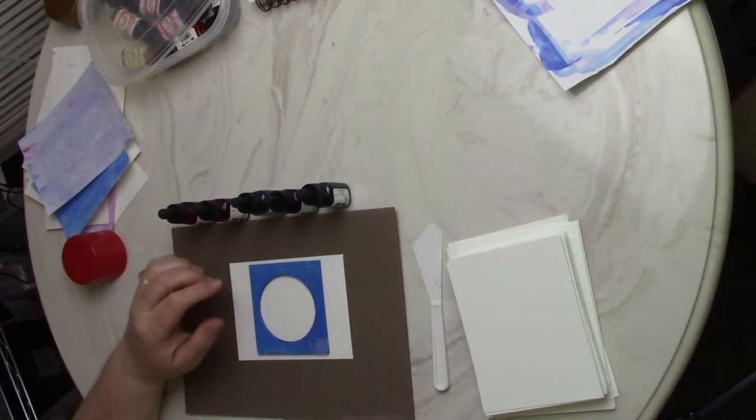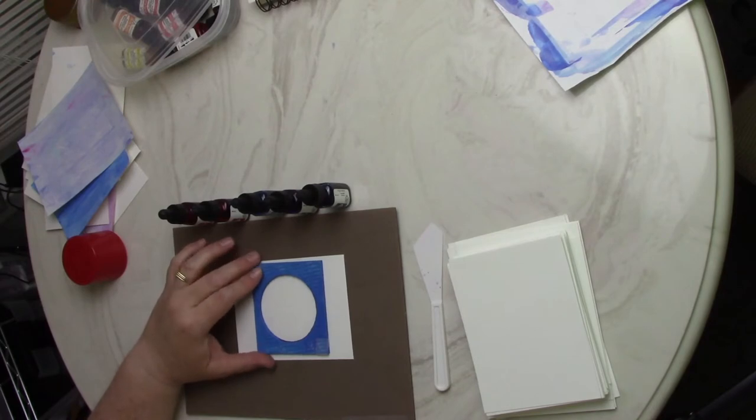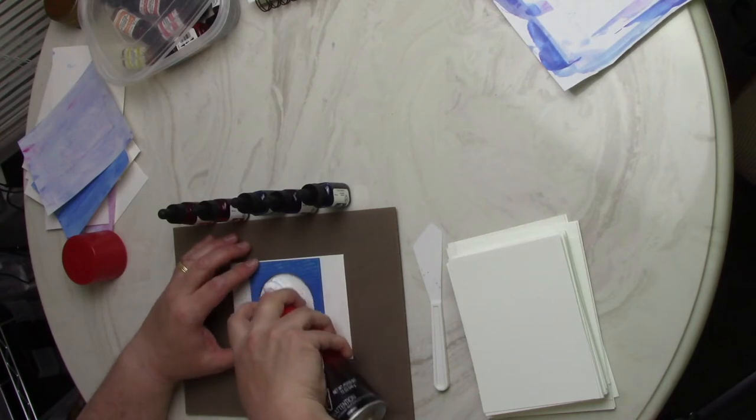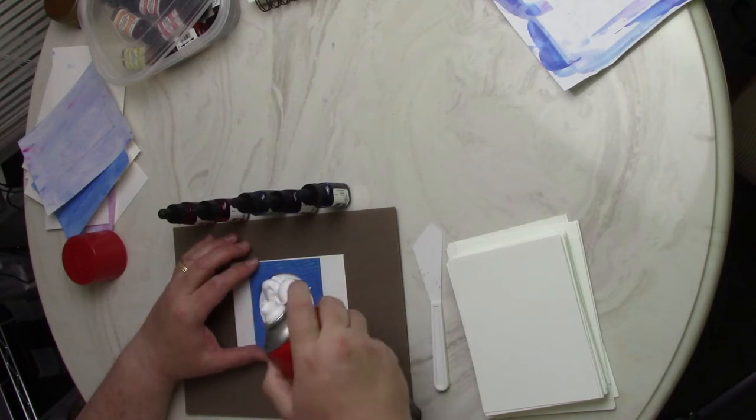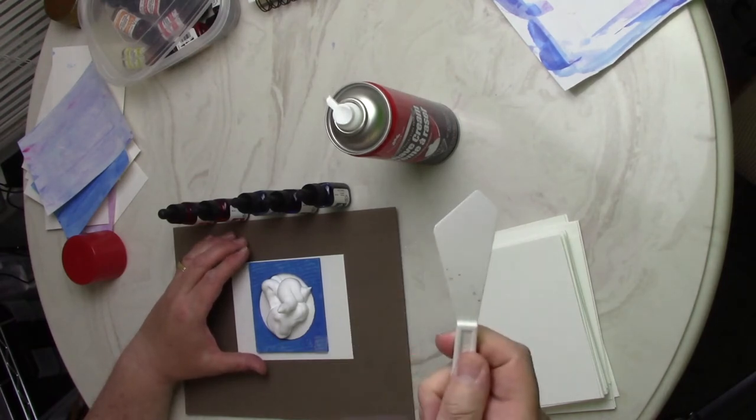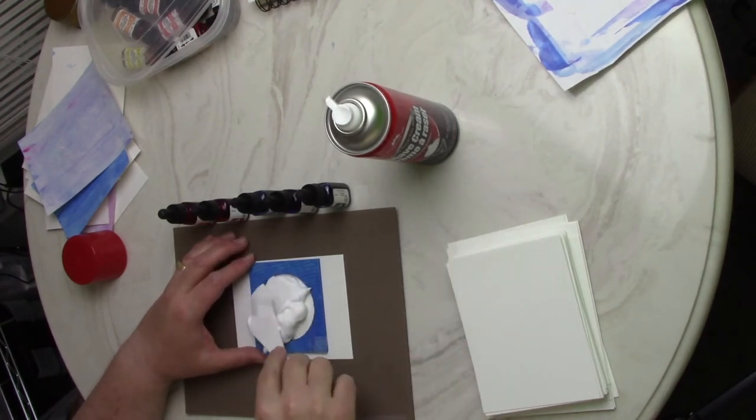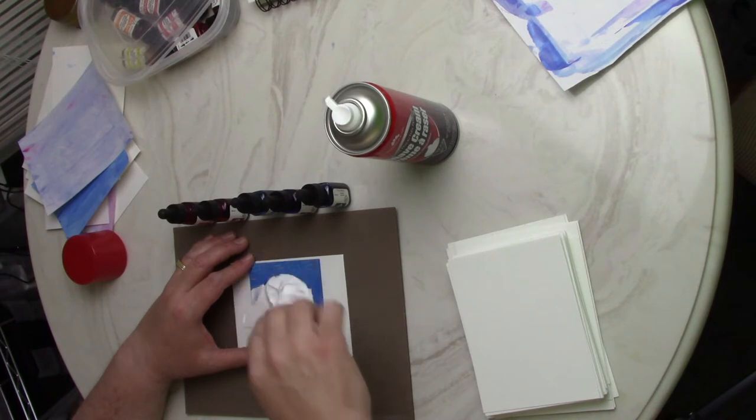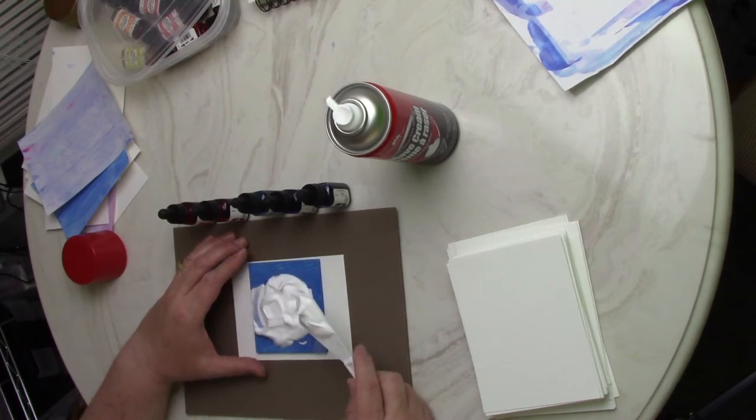So I'm also using a dot that I 3D printed. You don't have to have that but it kind of keeps you in the lines a little bit. I'm also using this paint spatula. So I'm putting the shaving cream kind of in the dot, spreading it around a little bit.